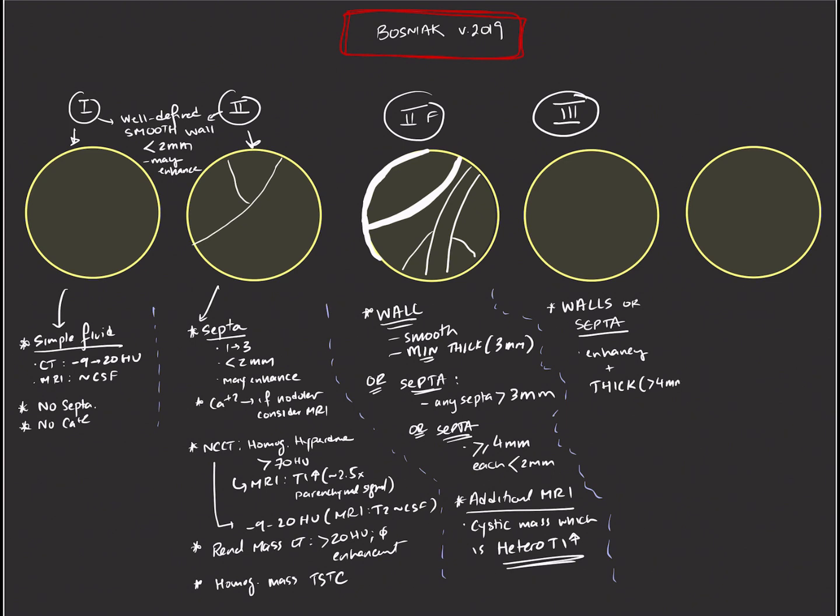In Bosniak 2, we're talking about less than 2 millimeters; at 2F, 3 millimeters; at 3, we're talking about septations or walls that are quite thick, more than 4 millimeters in thickness, as can be seen in these drawings over here.